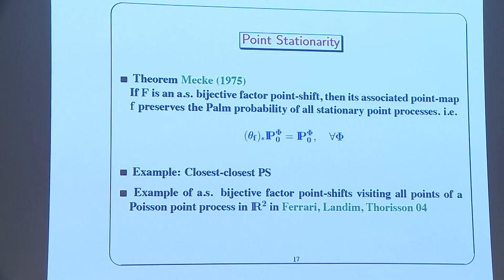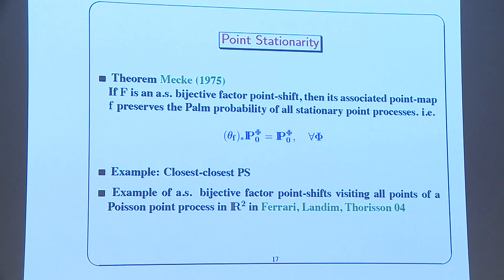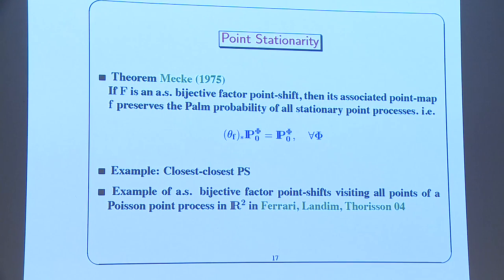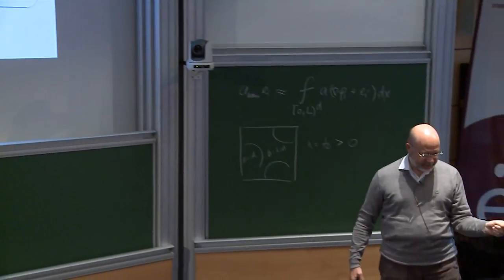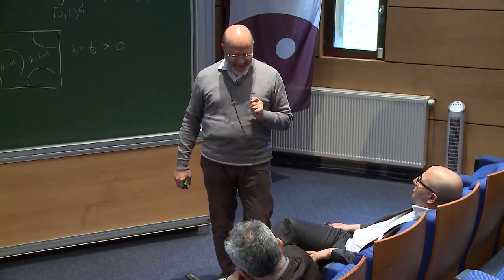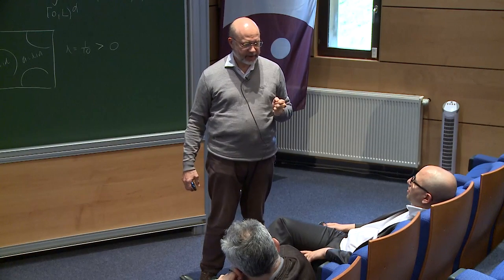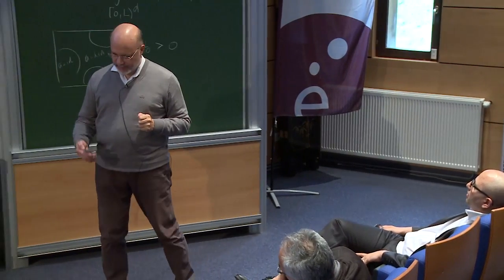Here is a theorem from the 1970s by Joseph Mecke. If f is an almost-surely bijective factor point shift, then whatever the point process it acts on, its associated point map f preserves the Palm probability — pushing the Palm probability by theta_f keeps the Palm probability. Among the examples given, only the closest-closest neighbor shift was bijective on all trajectories.